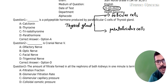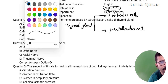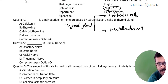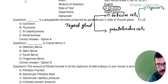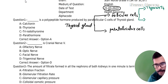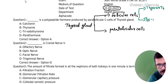We have two endocrine cells — follicular cells and para follicular cells. Follicular cells produce two endocrine hormones: T4 (thyroxin) and T3 (triiodothyronine).